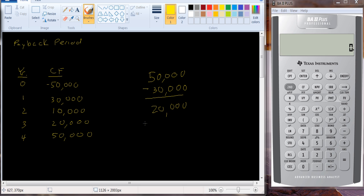In year two, we get another $10,000. So we've already gone two periods and we still have $10,000 to go. Now, the last year, we're going to earn more than we actually need to recoup the cost. And what fraction of a year is it?